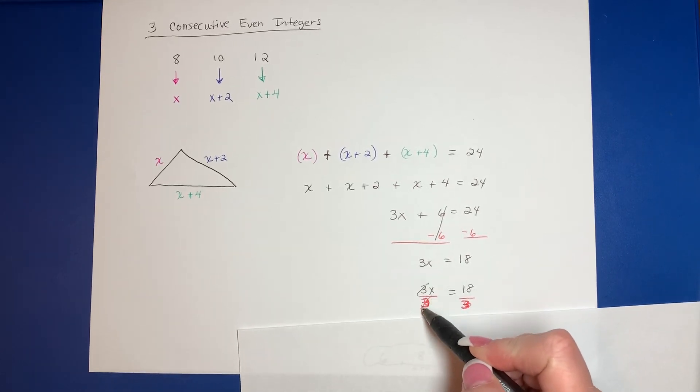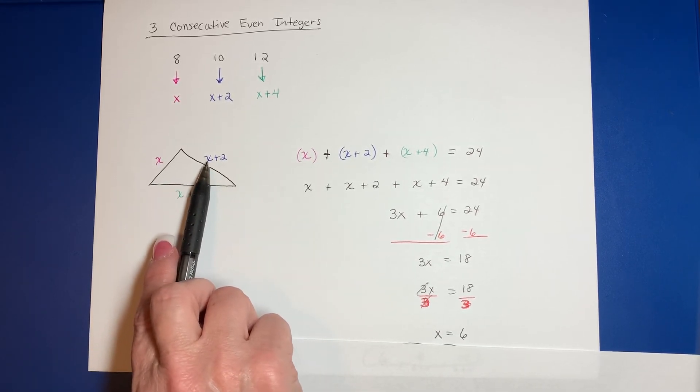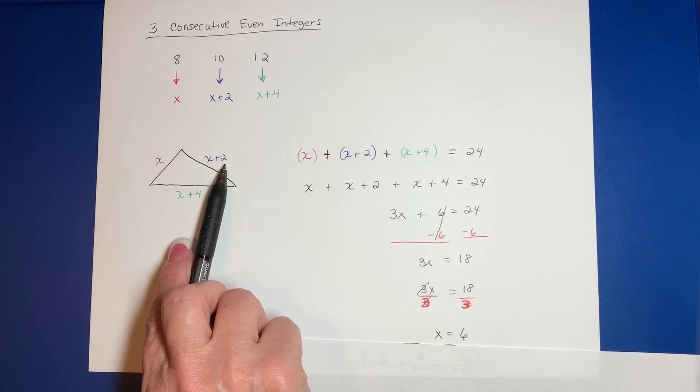Then I would divide both sides by 3. So 3X equals 18 divided by 3. X was my shortest side, so that would be 6.